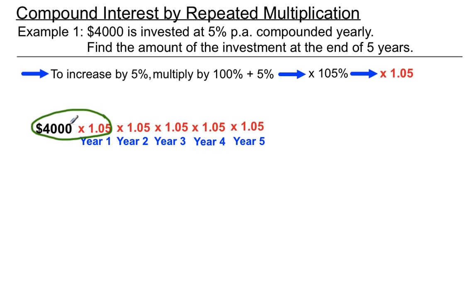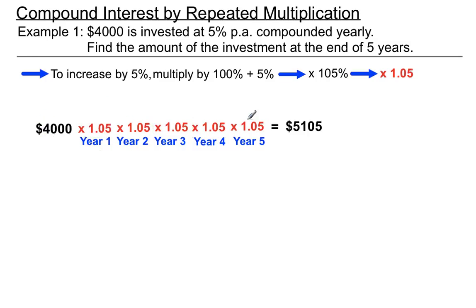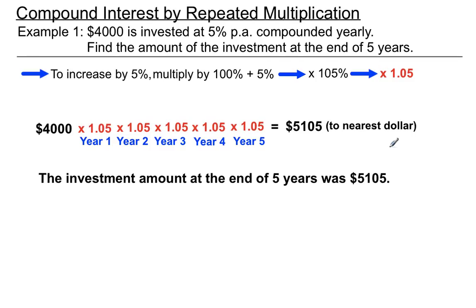So we started off in the first year increasing $4,000 by 5%. Then in the second year we're increasing that by 5%, and then that again by 5% — you can see how we're getting interest on our interest. On the calculator, doing all those multiplications, we get a total of $5,105. That does include the $4,000 we started with, but $4,000 has grown to $5,105 — rounded to the nearest dollar. The investment amount, the total amount, has grown to $5,105.